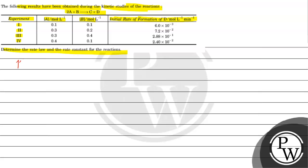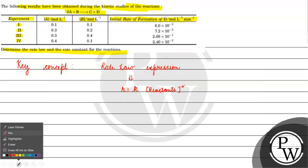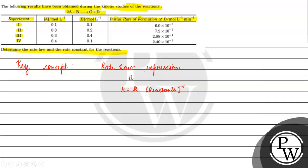The key concept for this question is the rate law expression. Rate law expression — what do we have? R is equals to K into concentration of the reactants raised to the power of some exponents. These exponents basically represent the order of the reaction.